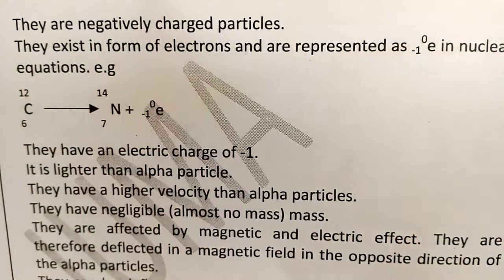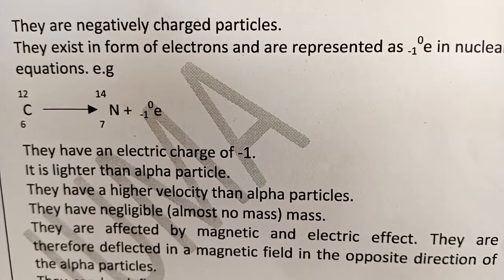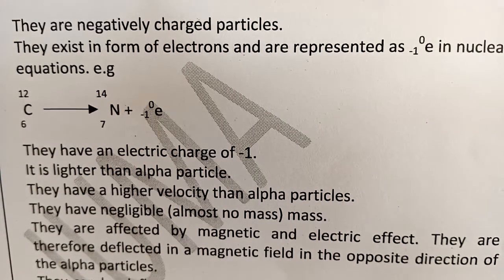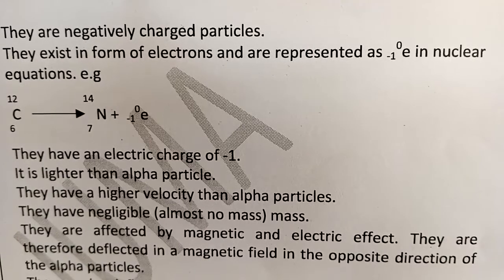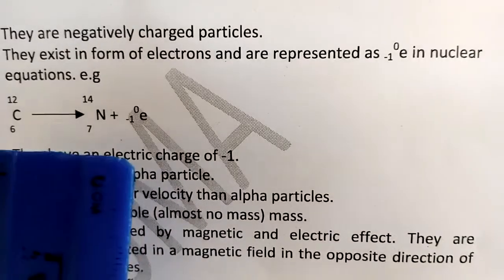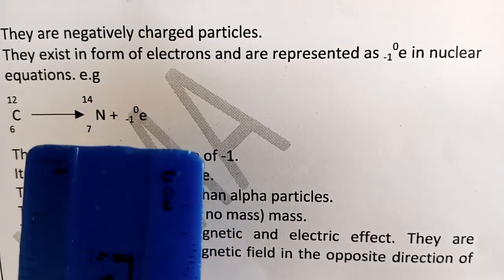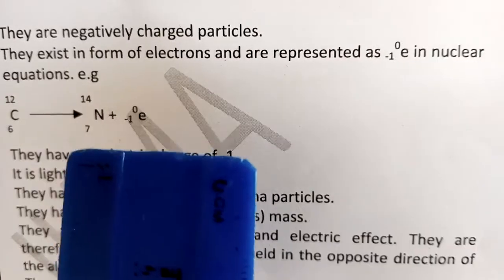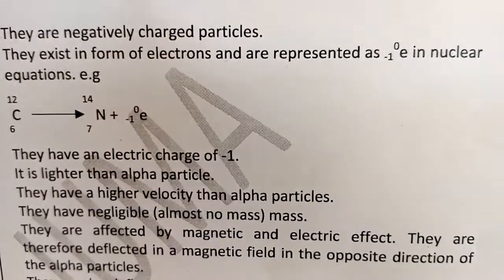Now let's consider the properties of beta particles. Beta particles are negatively charged particles that exist in the form of electrons, represented as negative-one-zero in nuclear equations. For example, radioactive carbon emits a beta particle to form the daughter nuclide nitrogen-14, and the electron is emitted in that process.